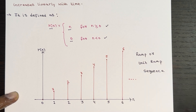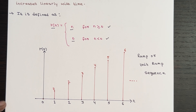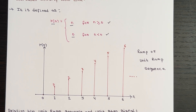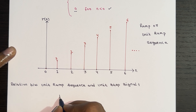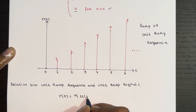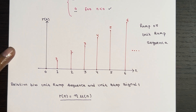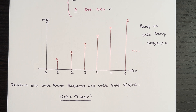Now let's explore the relationship between the unit ramp sequence and the unit step signal. It is defined as r(n) equals n times u(n). So the unit ramp sequence r(n) is equal to n multiplied by u(n). That is the relationship between the unit ramp sequence and the unit step signal.